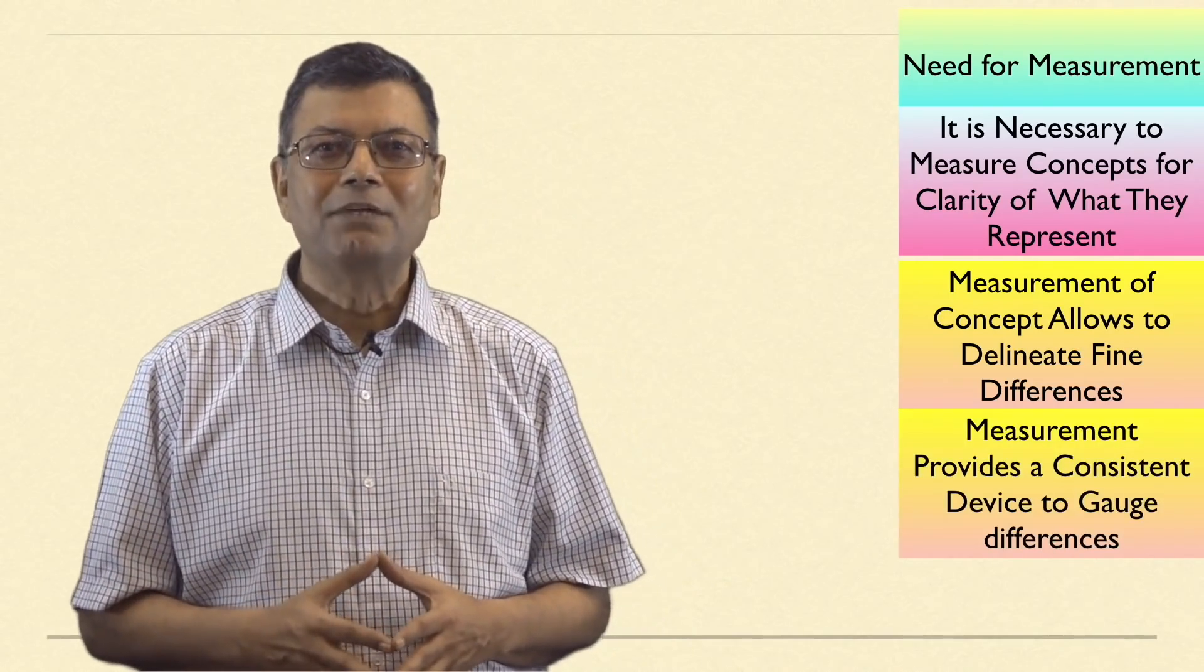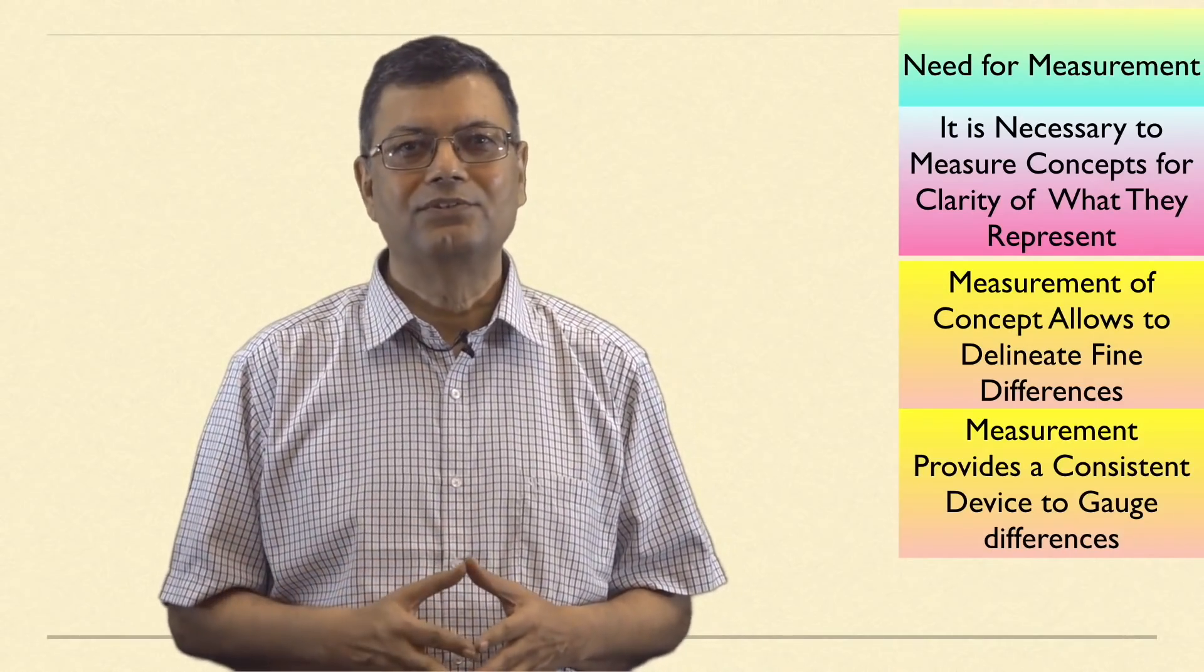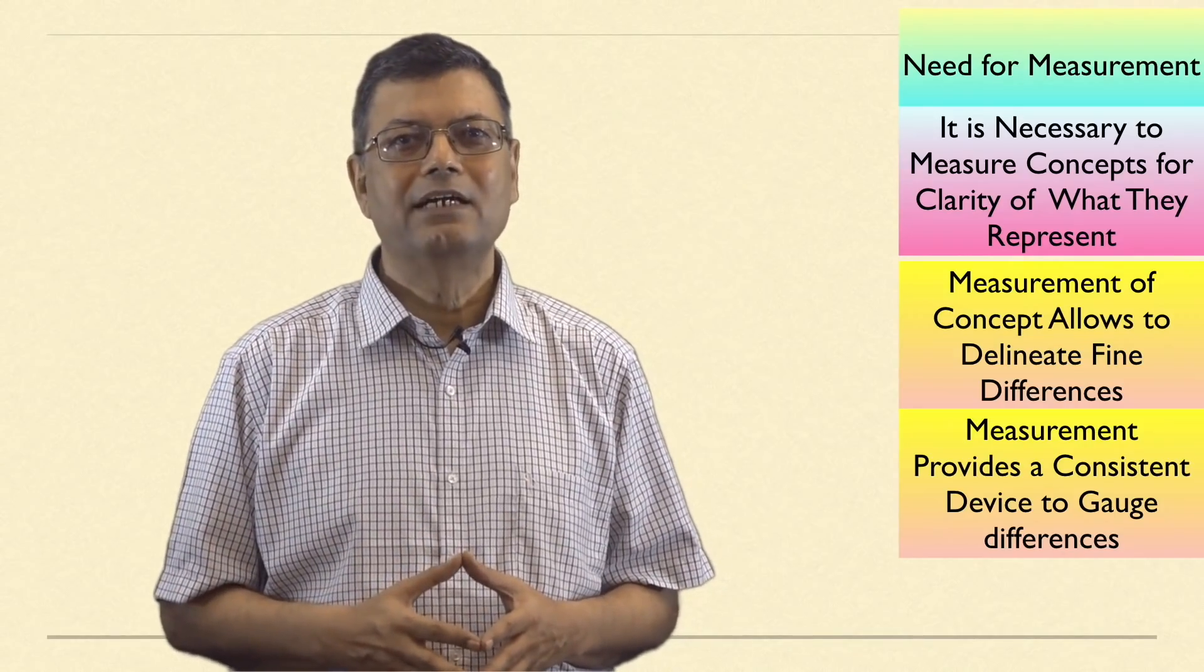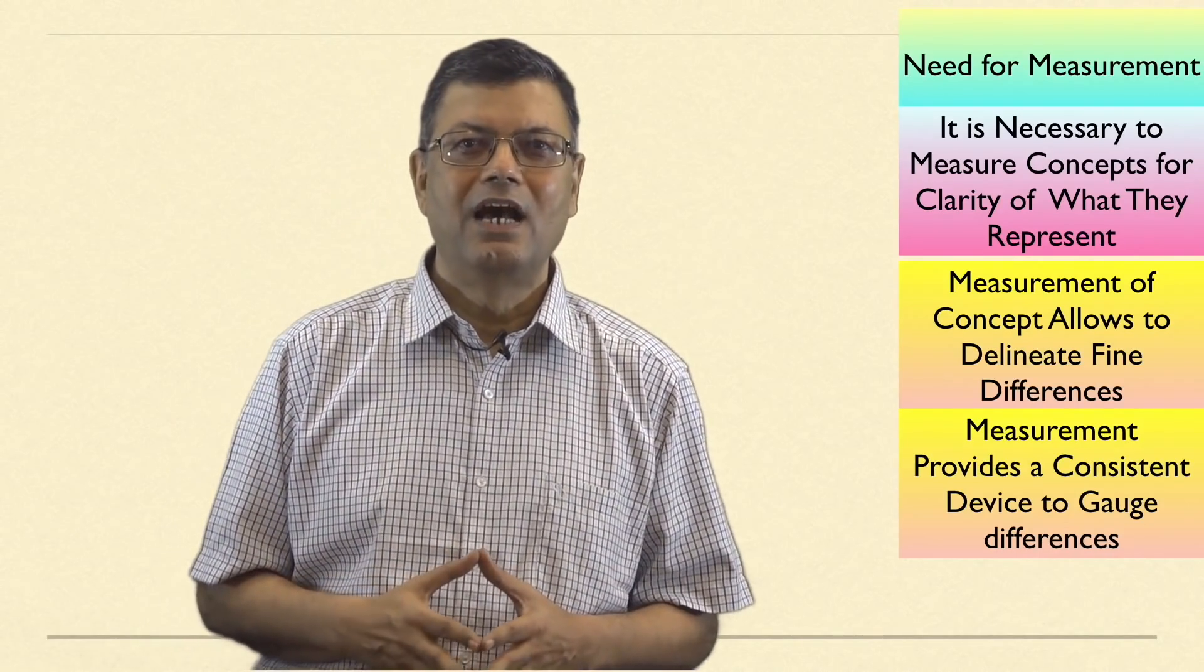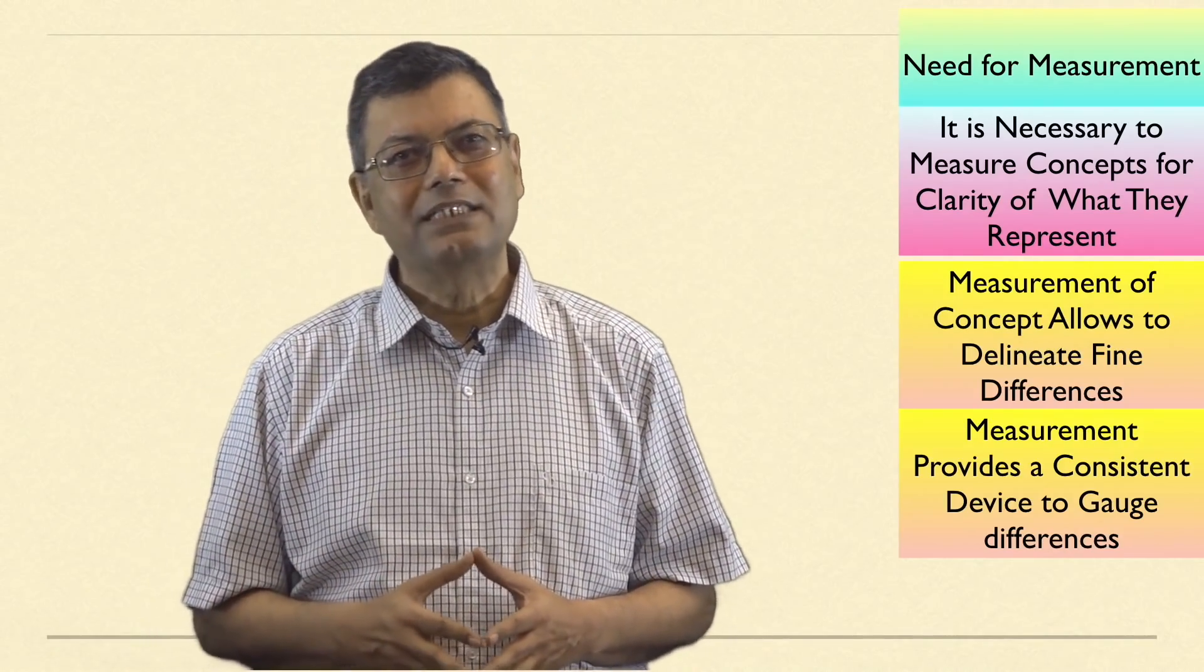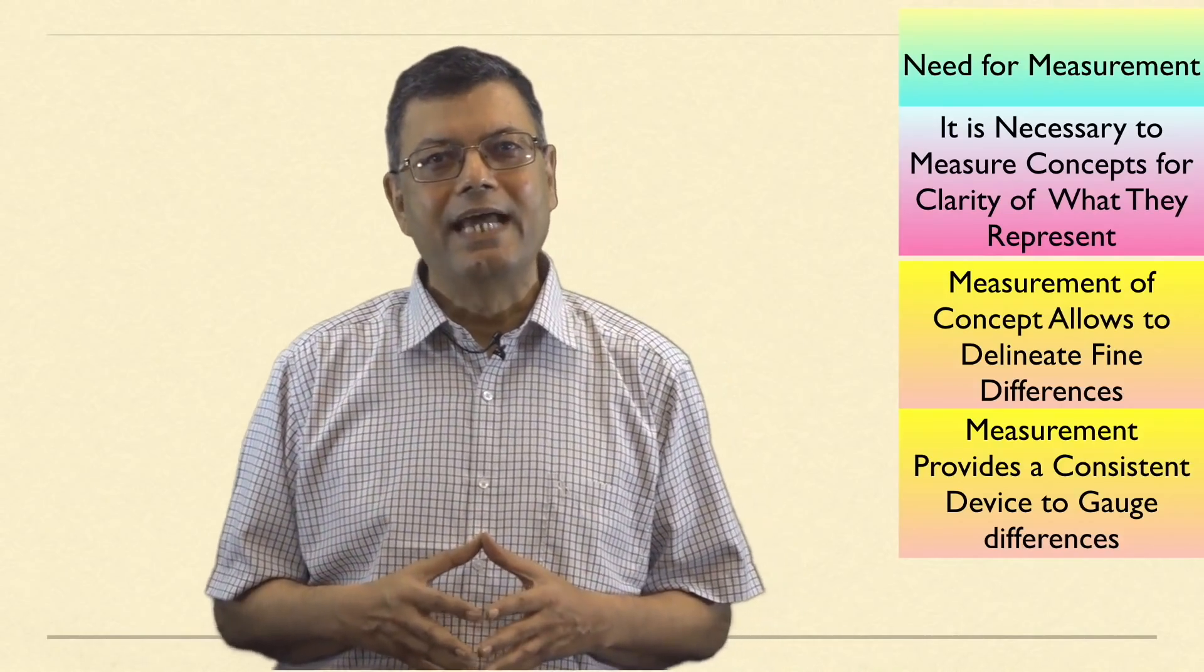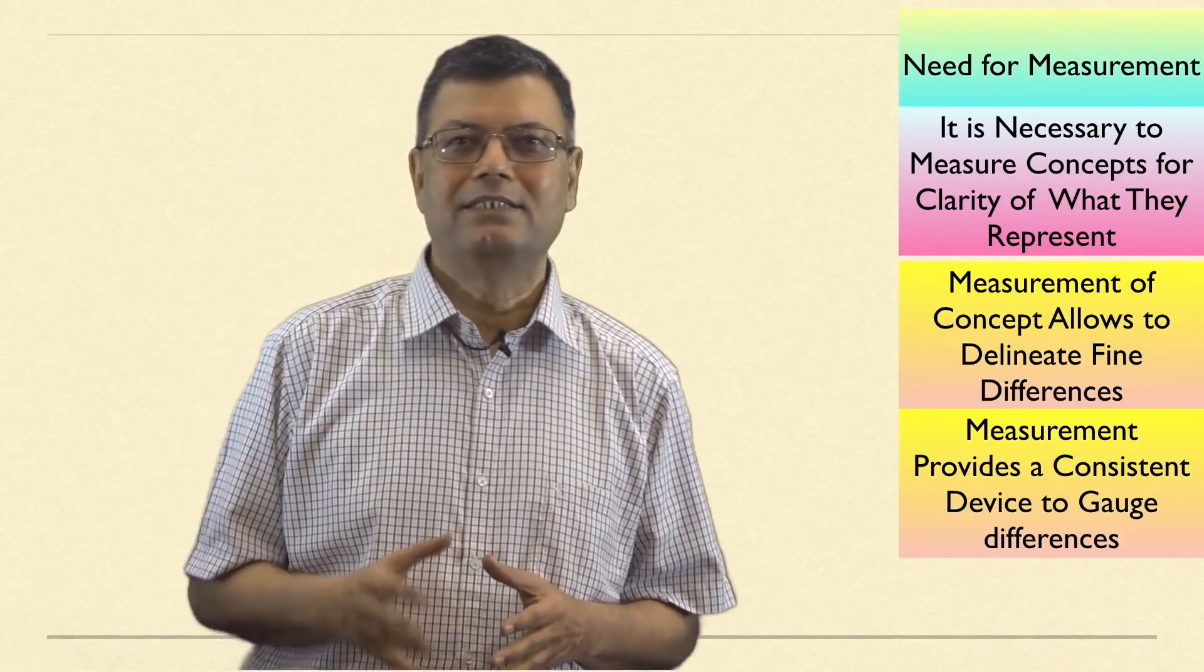Secondly, measurement gives us a consistent device or yardstick for making such distinctions. A measurement device provides a consistent instrument for gauging differences. This consistency relates to two things: our ability to be consistent over time and our ability to be consistent with other researchers. In other words, a measure should be something that is influenced neither by the timing of its administration nor by the person who administers it.